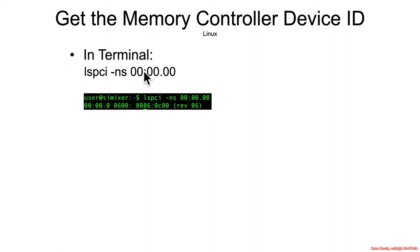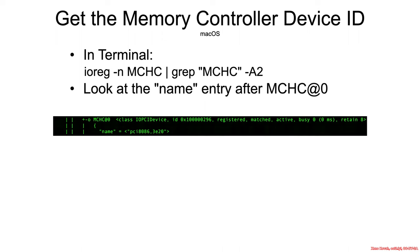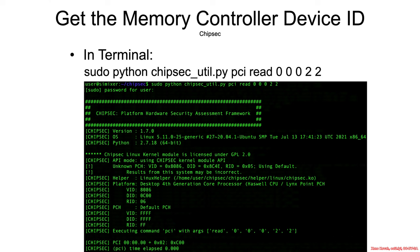You have options to find this in Linux using LSPCI, specifying bus 0, device 0, function 0. Offset 2 is what you care about. In macOS terminal, use ioreg and look for the MCHC — again offset 2 is what you care about. With ChipSec, use bus 0, device 0, function 0, offset 2, reading 2 bytes, and that gives you what you need.